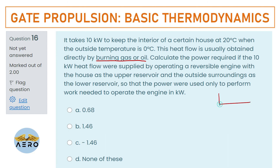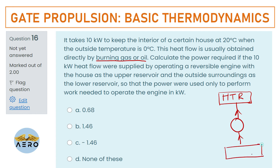Draw the cycle: we have the upper reservoir at high temperature, the heat pump, and the low thermal reservoir at 0°C. The interior is maintained at 20°C.